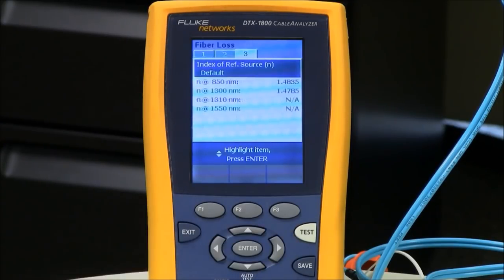Then we go across to tab number three, where we see the index of refraction. This is going to affect the length reported by the cable analyzer. So please go to the cabling vendor's website, download their latest data sheet, and make sure that the values on that data sheet match what's on the screen here. If it doesn't, change the values here.